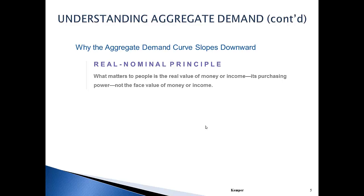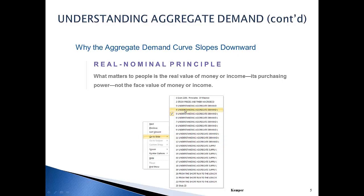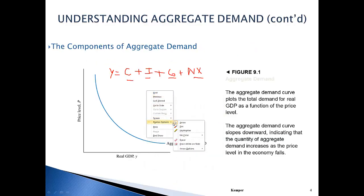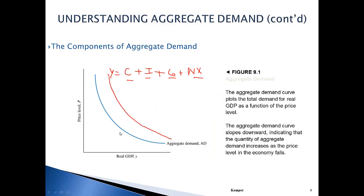We don't want to just increase nominal GDP. If we increase aggregate demand and overall GDP and it was just nominal, what would happen is we would see an increase in output but also an increase in price. You see the price where we hit the y-axis actually goes up, and therefore we don't actually see an increase in wealth.